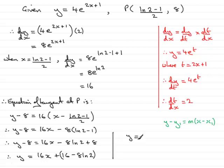this is y is identical to ax plus b where clearly a equals 16 and b is equal to 16 minus 8 times the natural log of 2.